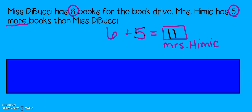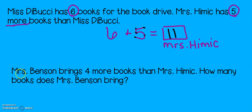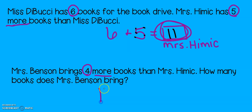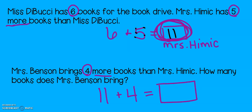But we are not finished yet because part two is under this blue bar. Let's take the blue bar away and see what it says to do next. Here is part two: Mrs. Benson brings four more books than Mrs. Himmick. How many books does Mrs. Benson bring? So let's think — we know that Mrs. Himmick brought eleven books. I learned that in part one. But Mrs. Benson brings four more books than Mrs. Himmick. How many did Mrs. Benson bring?